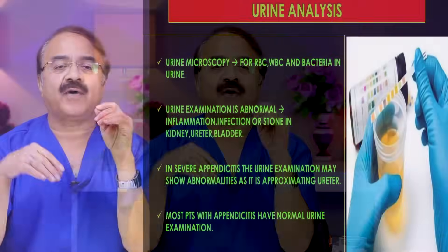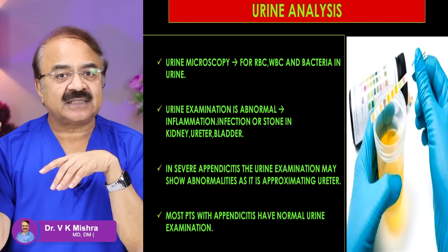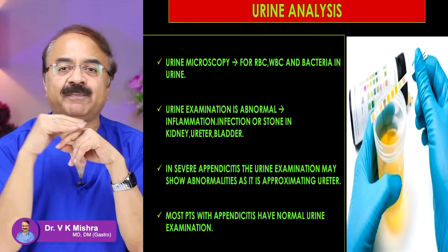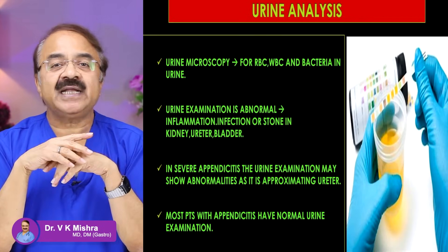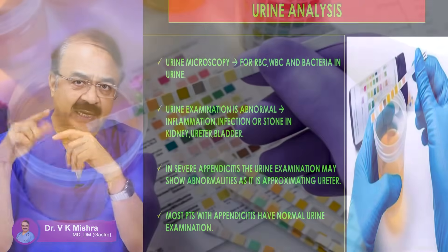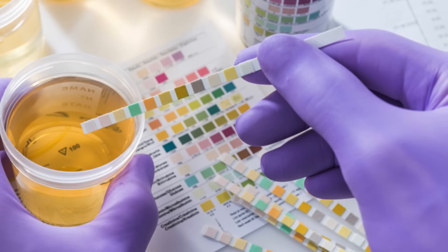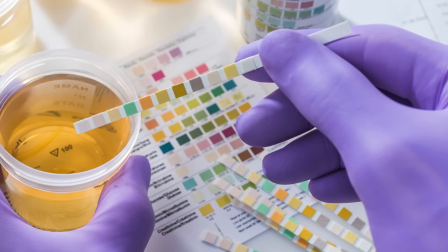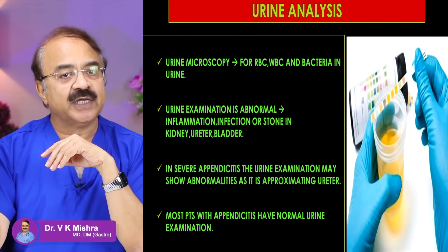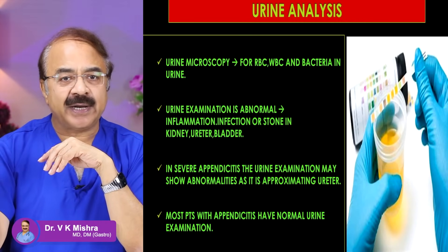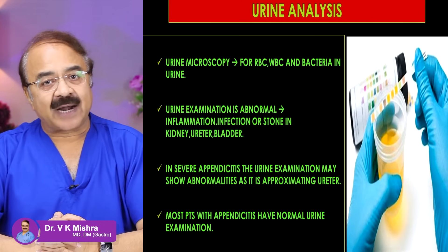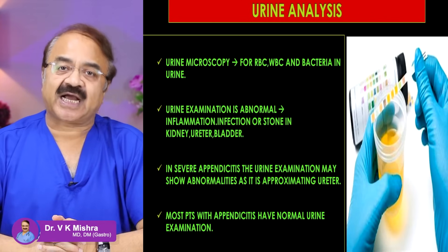जो दूसरा test करते हैं, is a urine analysis - it's a very simple test। Urine की microscopy करते हैं just to look for कि urine में कहीं red blood cells, white blood cells, या bacteria तो नहीं हैं। चूँकि ureter बिल्कुल appendix के पीछे चलती है, तो बहुत सारी ureter की problems कभी-कभी appendix के दर्द को mimic करने लगती हैं। अगर ureter या kidney में कोई infection, inflammation, या stone है, तो urine examination में RBC, WBC, bacteria सब दिखाई देने लगेंगे।